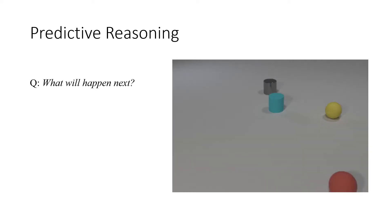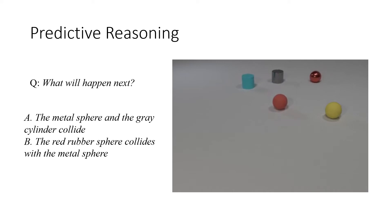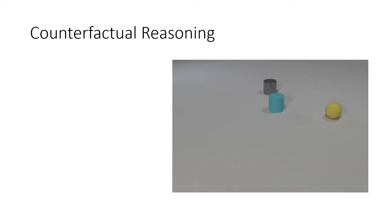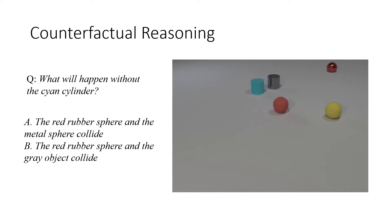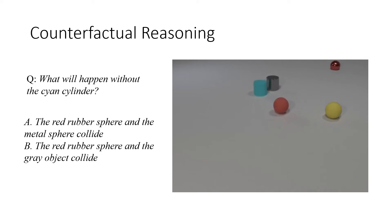The predictive question asks about a future event after the video terminates. In this example, the metal sphere will move along the white arrow and collide with the red sphere, so we choose the second answer. For the counterfactual question, the model must imagine the outcome when one object is removed from the scene and select the event that will happen in that unobserved scenario. For example, when asked what will happen without the cyan cylinder, the answer is that the red sphere and the gray object collide.